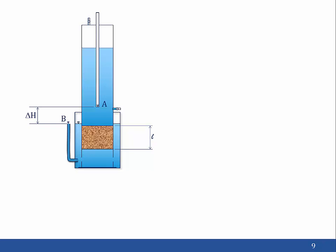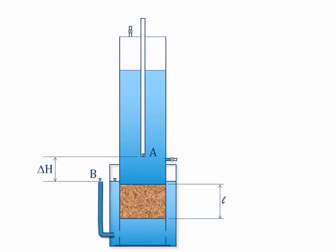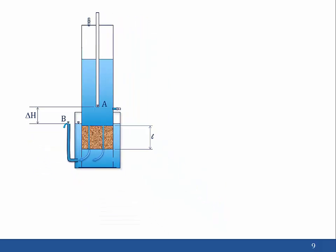This animation illustrates how the test is performed. Once the Mariette bottle is filled and the standpipe height is set, water will start flowing through the specimen, out the bottom of the permeameter and into the bucket. At the same time, air bubbles will enter the bottle through the standpipe, travel up to the top of the bottle, and the water level in the Mariette bottle will drop. Water will also be flowing out of the standpipe attached to the bucket. During the test, you will measure the initial elevation of the water in the bottle, the final elevation of the water in the bottle, and the time required for the water to drop that distance.